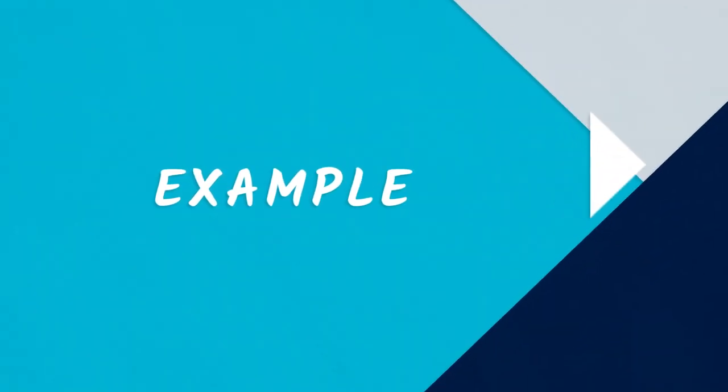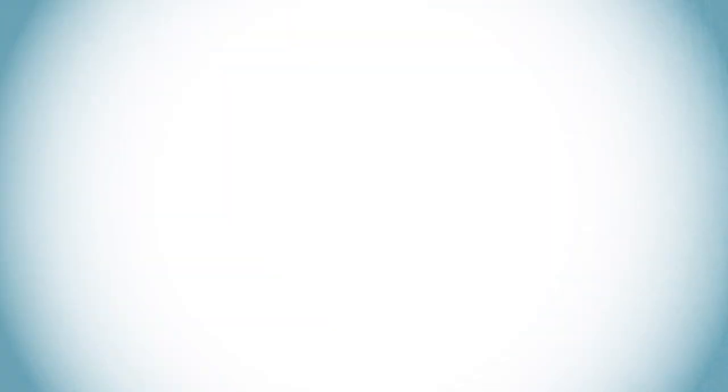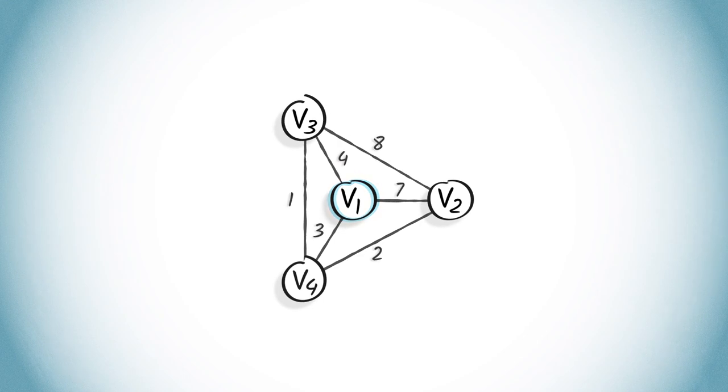Various strategies can be used to further optimize backtracking, by pre-selecting which branches to examine first. As an example, we could select the branch whose starting vertex is the closest to the current vertex.